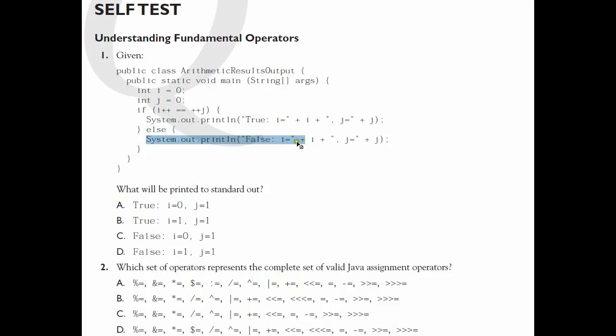So we'll run to the else part of this if statement. But as we come to the else part, we should realize that i would also be incremented by 1 as the postfixing would take effect. So what would be printed out would be false, i equals 1, j equals 1. This is what would be printed out.